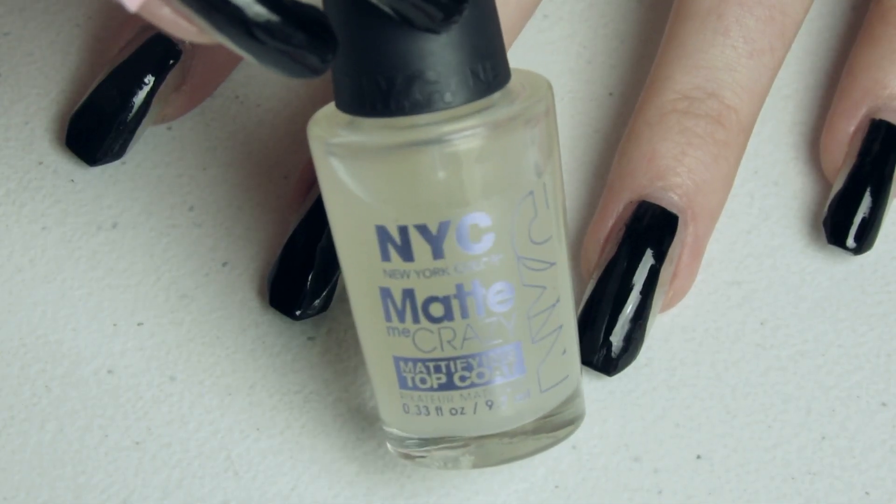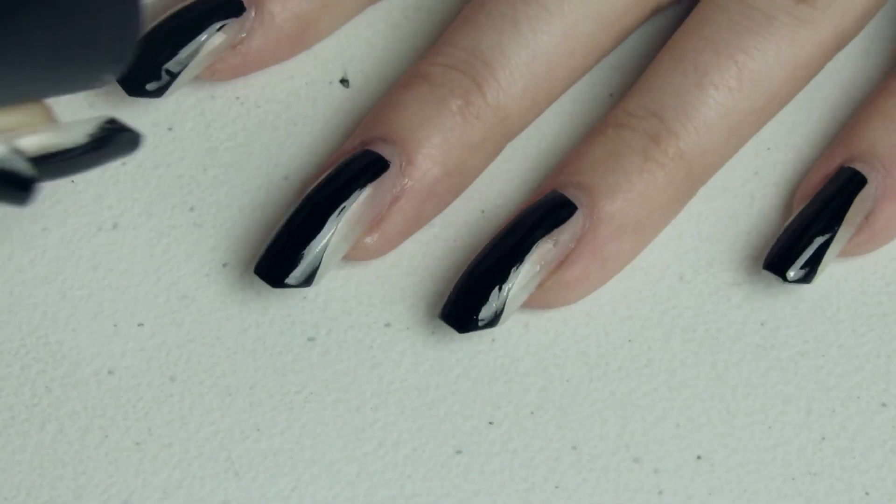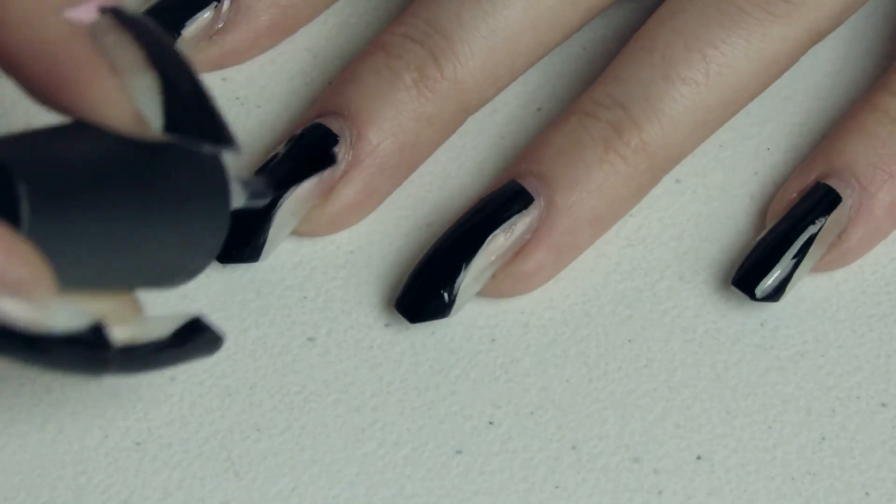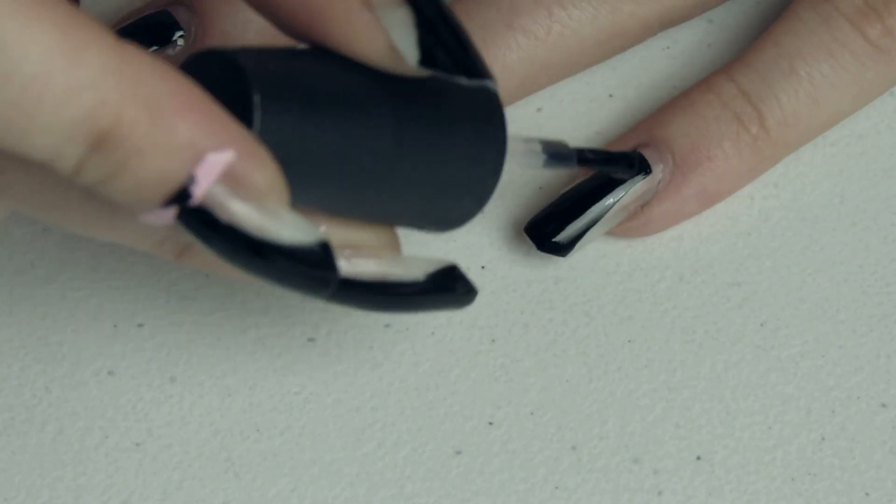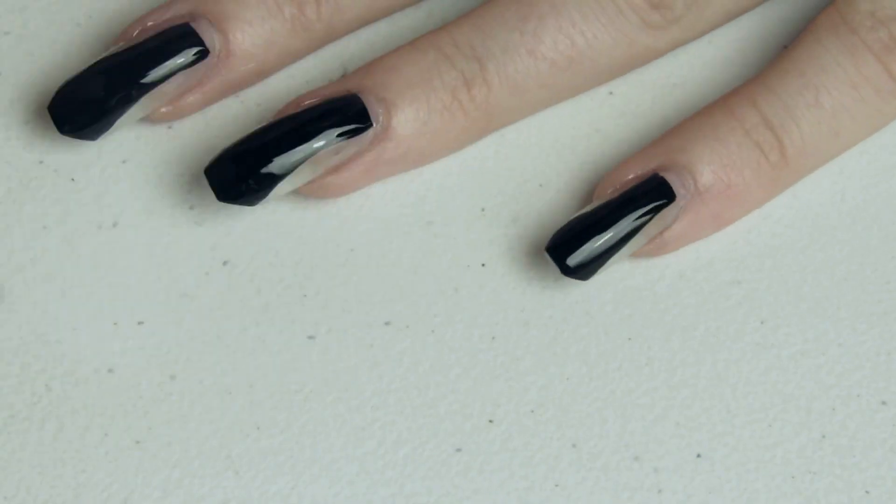Then once they were dry, I took this NYC Matte Me Crazy because I kind of wanted them to be matte. I thought it made them look better. You can leave them shiny. You can even have a color underneath the coffins. I just left them natural like that.